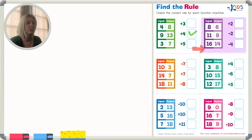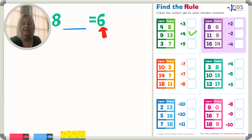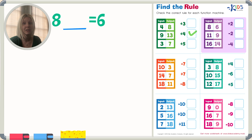Let's go to the purple one. We're going to start with 8 — that's our input — and we have to do something to 8 to make it equal our output, which is 6. I want to use logical thinking: if I have 8 and end up with 6, that gives me a clue. I know I'm going to subtract to get a smaller number, so it's going to be subtraction — either minus 2 or minus 4.